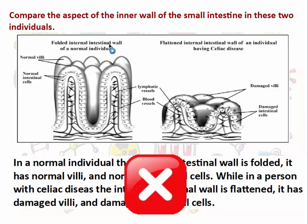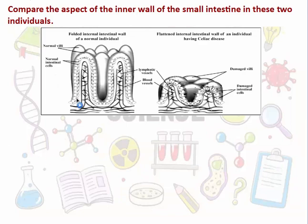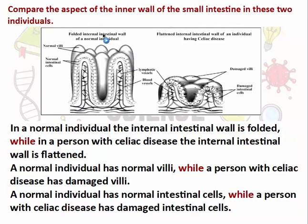We compare each aspect to itself. We compare the internal wall here with the internal wall there; when done, we compare the villi with the villi; then we compare the intestinal cells with the intestinal cells. So: in a normal individual the internal wall is folded, while in a person with celiac disease the internal wall is flattened. A normal individual has normal villi, while a person with celiac disease has damaged villi. A normal individual has normal intestinal cells, while a person with celiac disease has damaged intestinal cells. Always compare each thing with itself between the two individuals or two samples.